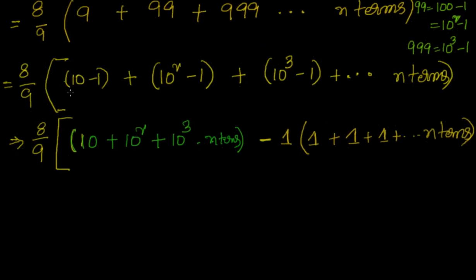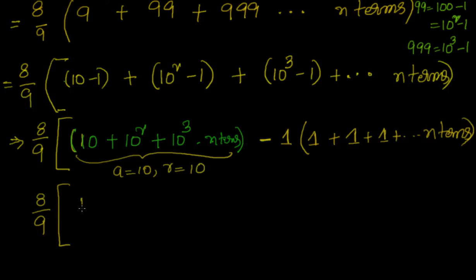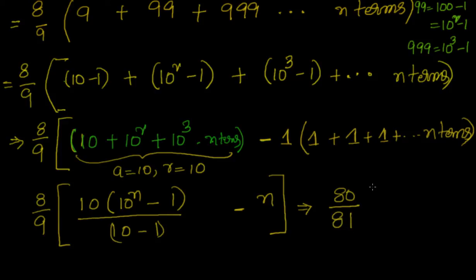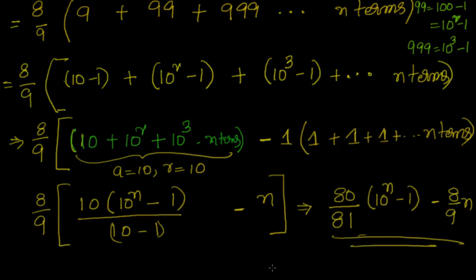Now you know the formula, so it is very simple. This is a geometric progression with a equal to 10 and r equal to 10. The formula gives a times r to the power n minus 1, divided by r minus 1. I can write the full expression as 8 by 9 into that sum. Expanding: 8 times 10 is 80, r minus 1 is 9, and 9 times 9 is 81. So the answer is 80 by 81 into (10 to the power n minus 1) minus 8 by 9 into n.